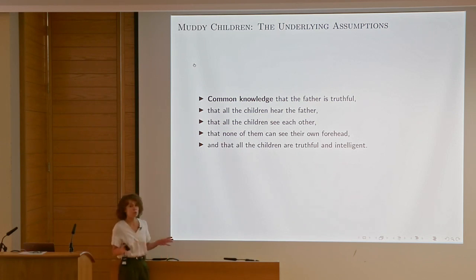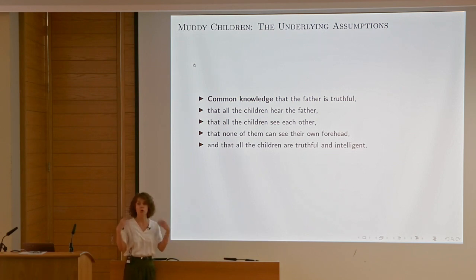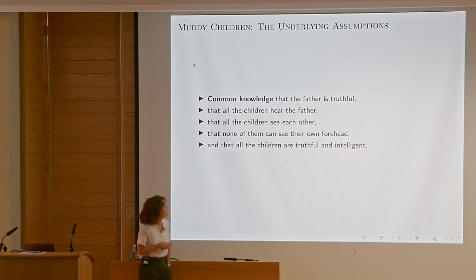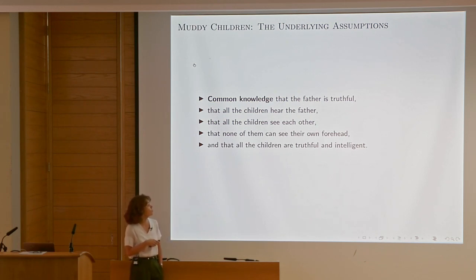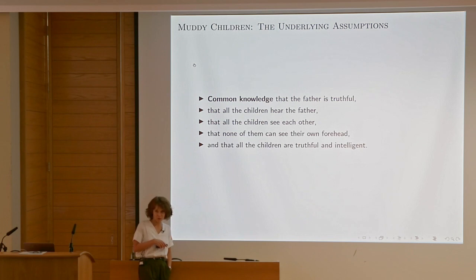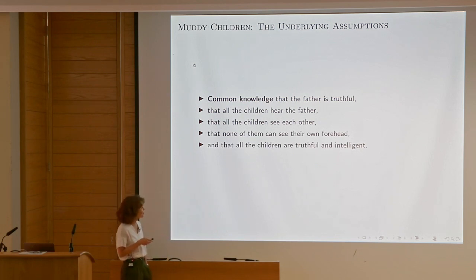The modeling works under the following assumptions: there is common knowledge between agents — all of them know, and all of them know that they know, that they know, and so on — that the father is truthful, that all the children hear the father, that all the children see each other, that none can see their own forehead, and that all children are truthful, intelligent, and perfect logical reasoners. So those are really ideal kids.